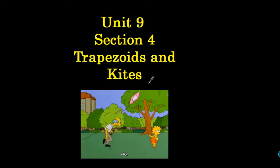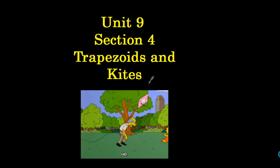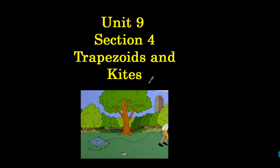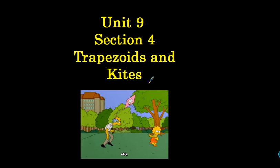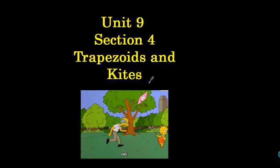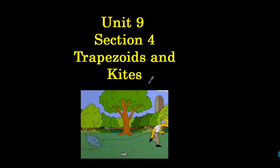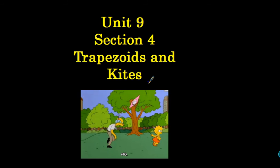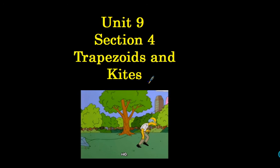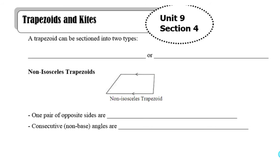Hey, it's Mr. Lunewski. It's our last video for Unit 9 on quadrilaterals. We're looking at trapezoids and kites today, and we're going to learn about those figures and some properties about them.